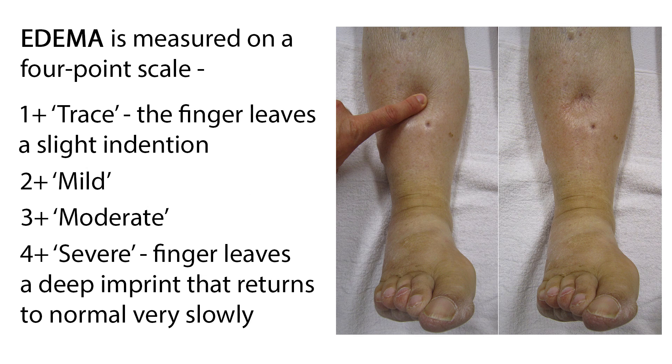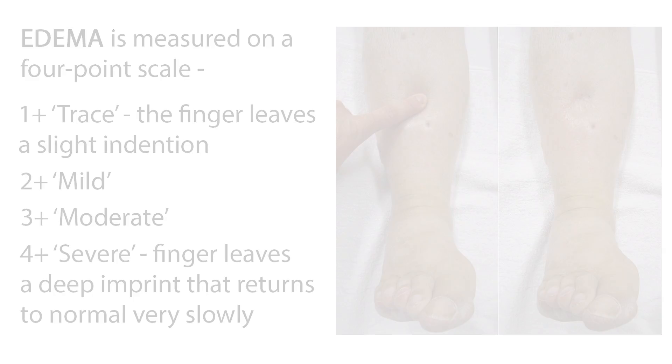Palpation is sometimes overlooked, but still an important aspect of the cardiovascular assessment. Palpate the apical impulse, noting the size, location, intensity, amplitude, and duration. It should be a gentle pulsation that coincides with the carotid pulse. Palpate the patient's extremities to assess skin temperature, texture, turgor, and edema. Edema is measured on a four-point scale, from 1-plus if the finger leaves a slight indentation, to 4-plus if the finger leaves a deep imprint that returns to normal very slowly. Check capillary refill by pressing the nail beds on fingers and toes; refill time should be three seconds or less.